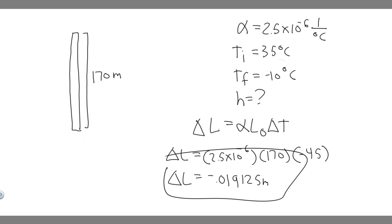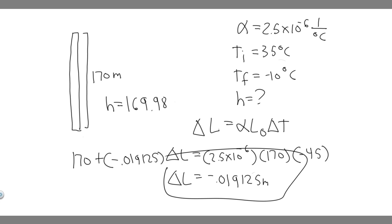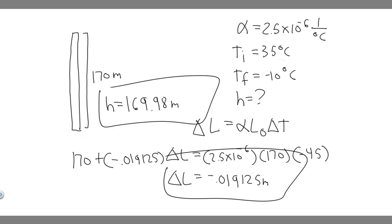We know the change is going to be negative — it's going to shrink that amount. So if we want to find the height when it's at minus 10, we just take the initial — 170 — and add the change in length. Since it's negative, it becomes less. So 170 plus negative 0.19125 gives us the new height H, which equals 169.9808, and rounding that gives us 169.98 meters. So our height when the temperature falls to minus 10 degrees Celsius is 169.98 meters.